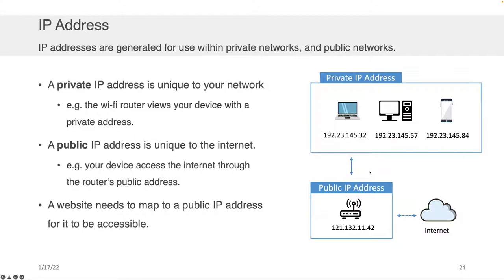When you hear talk about IP addresses, you might hear a distinction made between a private IP address and a public IP address. A private IP address is unique to your network — for example, the Wi-Fi router views your device with a private address. So your phone, your printer, and all those devices among themselves can come up with a way of setting addresses.